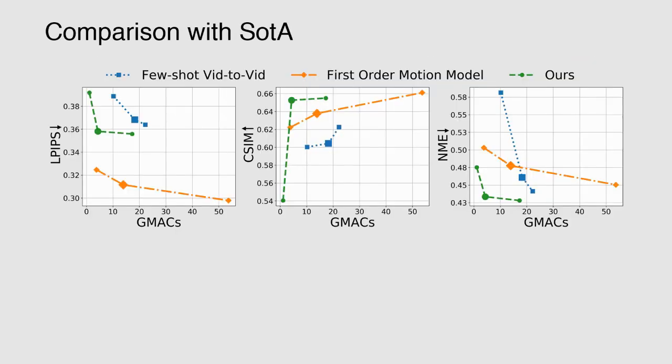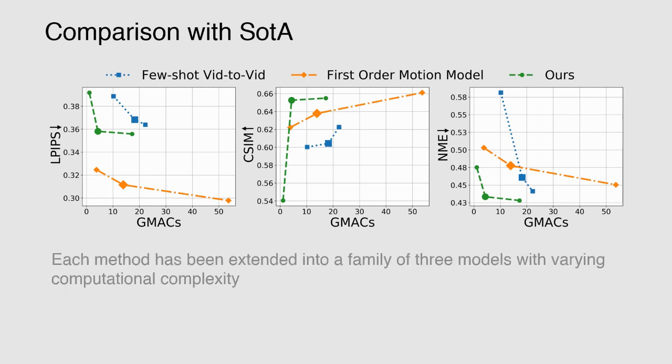We extensively compare with two state-of-the-art methods: few-shot-vid-to-vid and first-order motion model. In order to better compare with the state-of-the-art, we evaluate families of models with varying complexity of the inference part. We measure the complexity of each model via the number of multiply-addition operations plotted on the x-axis. On the y-axis, we show the quality metrics: learned perceptual image similarity, lower the better; cosine similarity between the embedding vectors of a face recognition network, higher the better; and normalized pose error. We outperform other methods across all metrics except for image similarity metric, where the first-order motion model performs better.